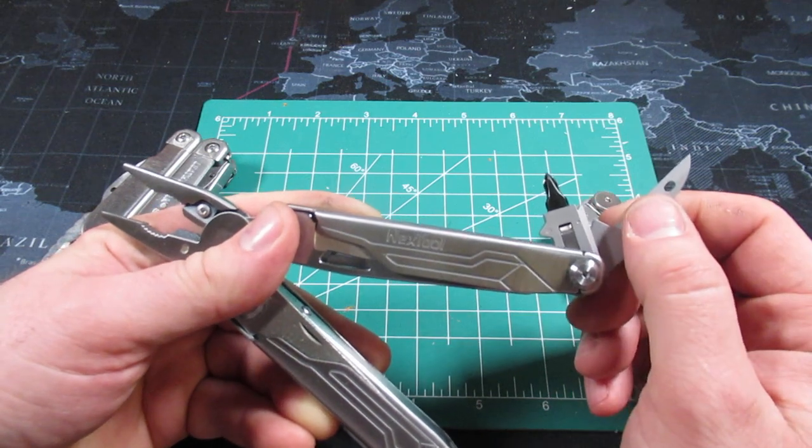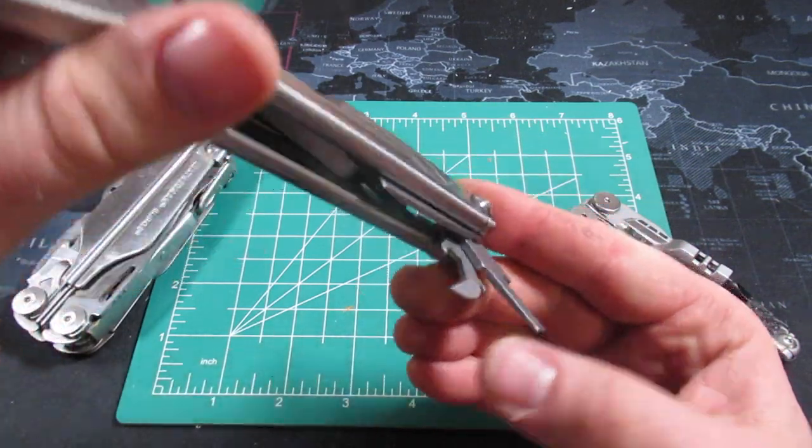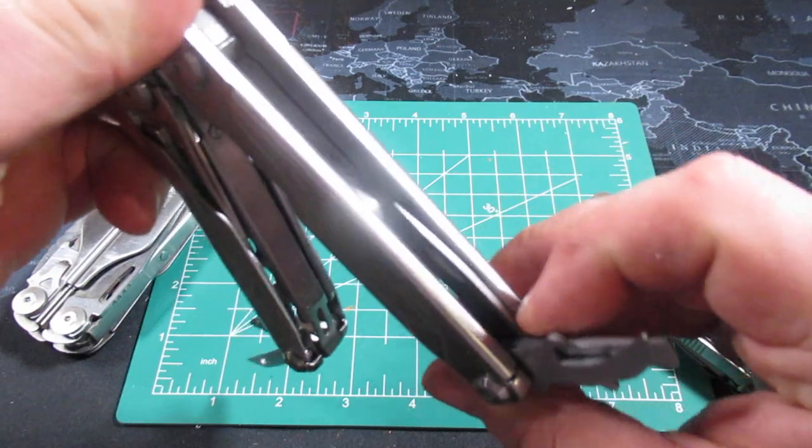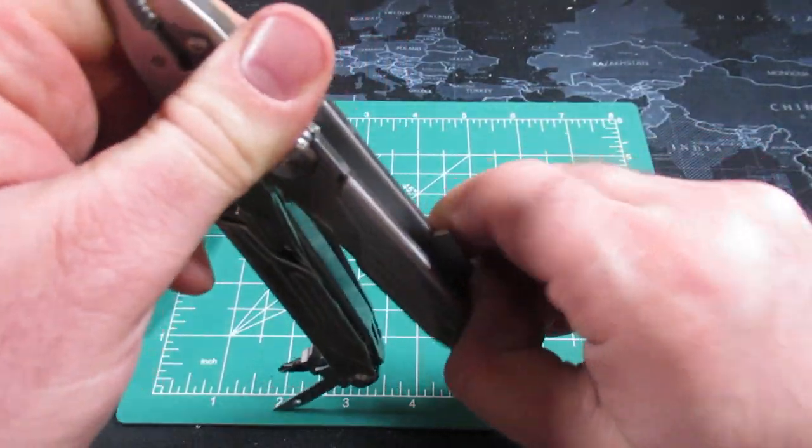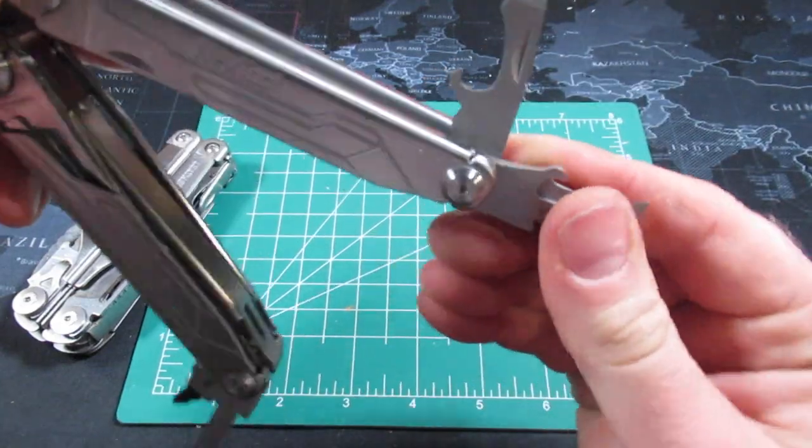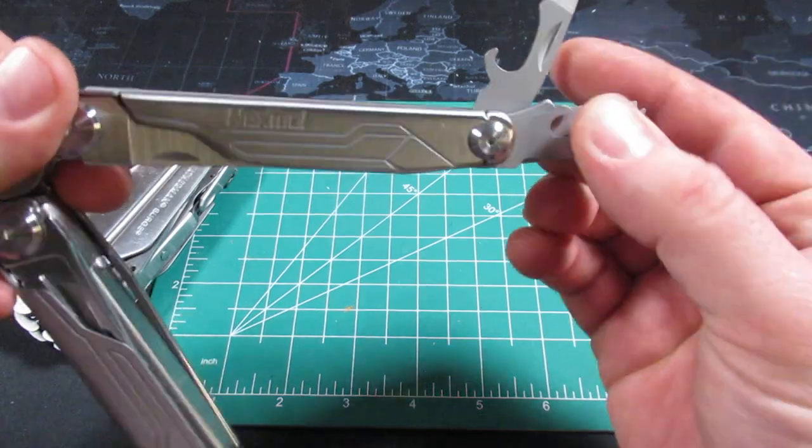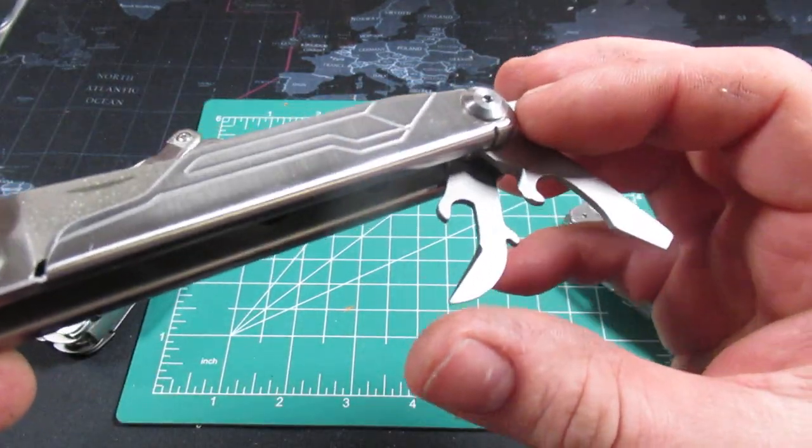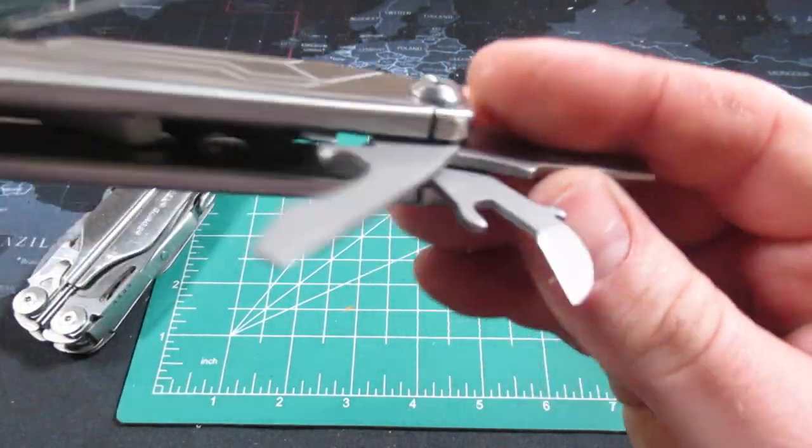So the Captain actually has the awl. They have the bit driver, and then they have a couple combo tools. So let's go ahead and bring this other combo tool out. They have the screwdriver with a wire stripper, the larger screwdriver, and then they have this can opener. So actually the can opener isn't really a combo tool, it's just a can opener.